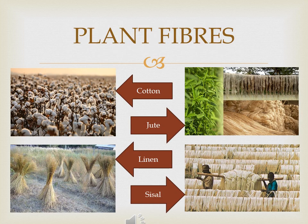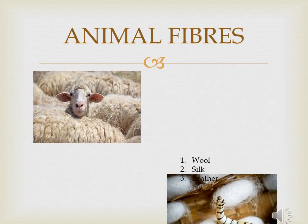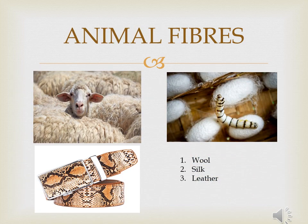We get cotton, jute, linen, and sisal from plants — they are plant fibers. We get wool, silk, and leather from animals — they are animal fibers.